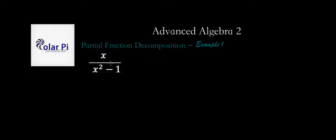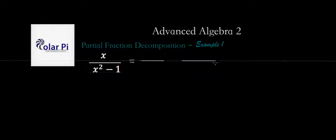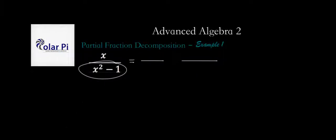Here as our first example, we see this rational expression that we now must turn into the sum of two rational expressions. So we're going to turn this one rational expression into the sum of two rational expressions, and this is what the partial fraction decomposition process does — it takes a given rational expression and writes it as a sum of two or more rational expressions. The denominator of one of our rational expressions is going to be one of the factors of this, and the denominator of the other will be the other factor.